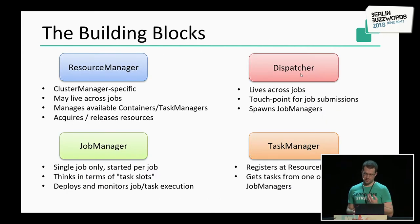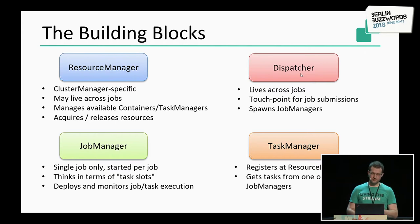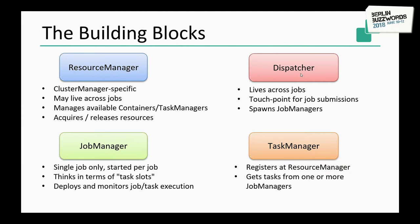The building blocks in detail: first, you have one resource manager, which is cluster-manager-specific — one for Yarn, one for Mesos, one for Kubernetes, and one for standalone. It lives across jobs and manages available containers and task managers, with responsibility for acquiring and releasing resources. Then there is the dispatcher, which also lives across jobs and is the touch point for job submissions. If you want to submit a job via CLI, you go through the dispatcher. The dispatcher spawns job managers, which exist only for a single job.